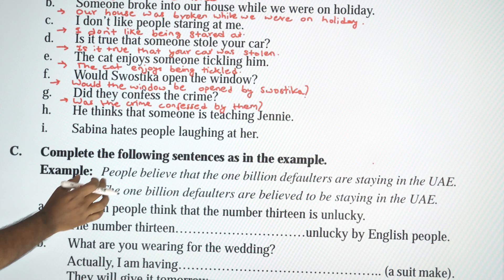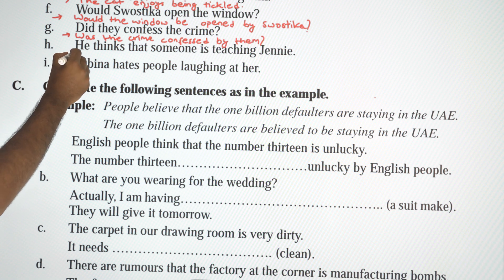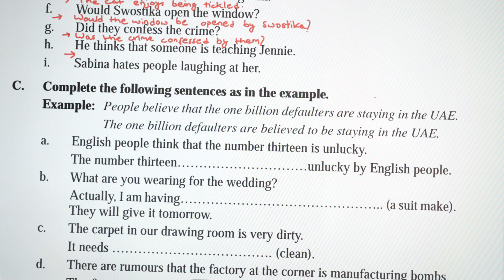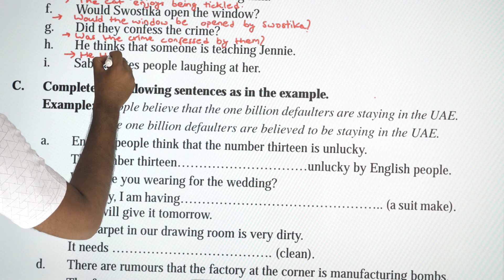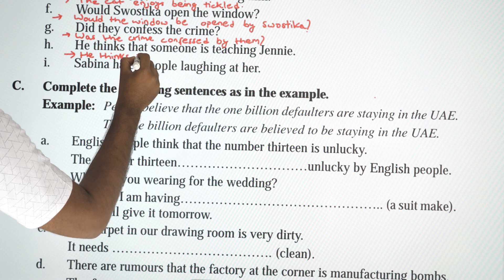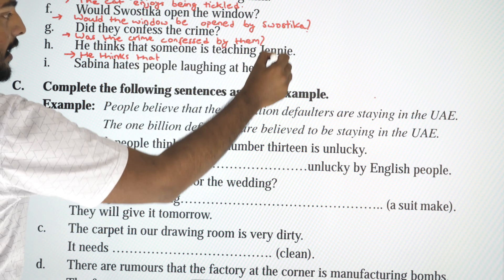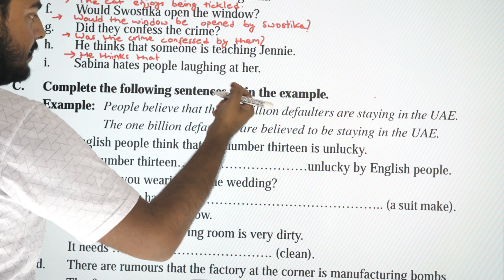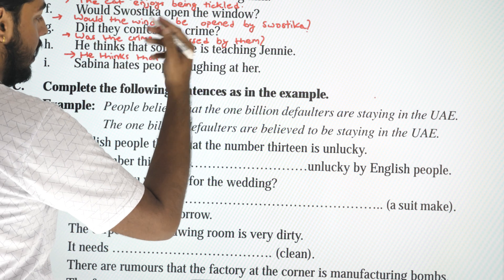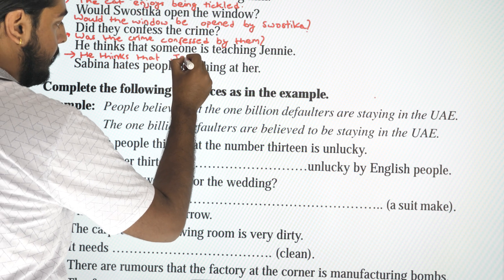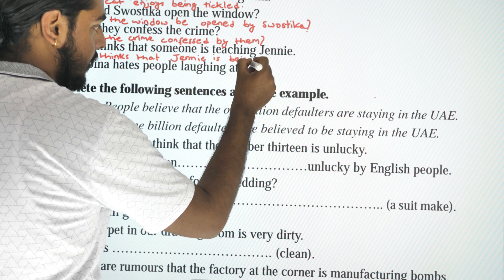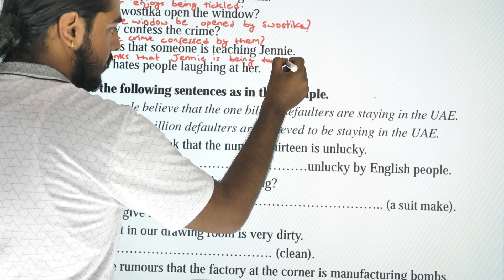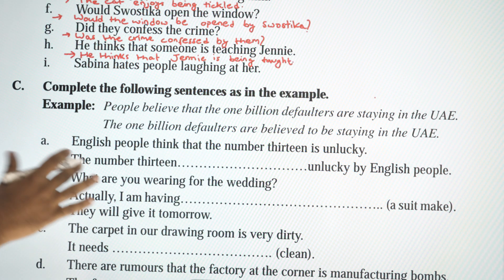Next: 'He thinks that someone is teaching Jinni.' Passive: 'He thinks that Jinni is being taught.' Since 'someone' is insignificant, 'by someone' can be omitted, or: 'He thinks that Jinni is being taught by someone.'